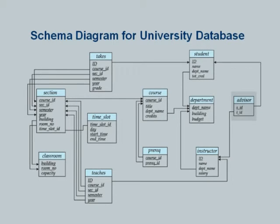The advisor relation links students with advisors. We have underlined just the student id value, which indicates that for the advisor relation, student_id is the primary key. What does this mean? A student can have at most one advisor. It does not mean a student must have an advisor — it is possible that a particular student row does not appear in the advisor table and therefore has no advisor. But a student cannot have more than one advisor with this constraint. If we changed the primary key to consist of both student_id and instructor_id, we would allow a student to have multiple advisors. Please study this schema carefully before the lab session.